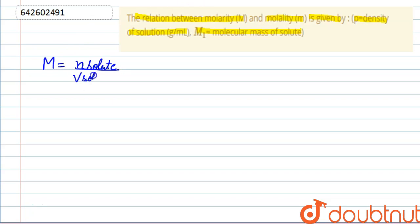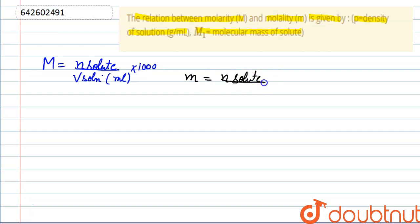We know that molarity is the number of moles of solute divided by the volume of solution in mL, multiplied by 1000. We are also familiar with the formula for molality, which is the number of moles of solute divided by the weight of solvent in grams, multiplied by 1000.